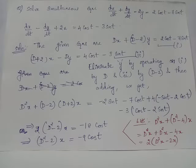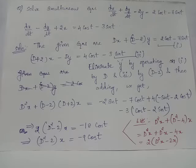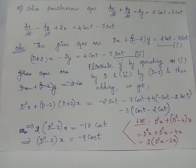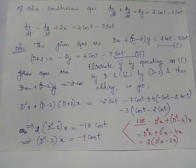In order to solve the simultaneous set of linear differential equations, we will have to eliminate one of the dependent variables. If we wish to eliminate y, we operate D throughout equation 1, and operate (D - 2) throughout equation 2, so that D(D - 2) acting on y cancels with (D - 2)(-D) acting on y.